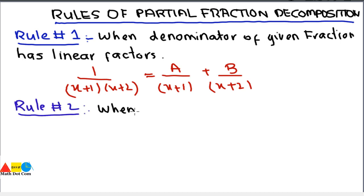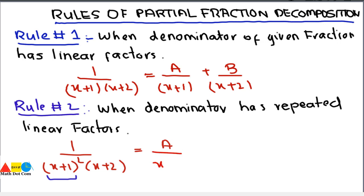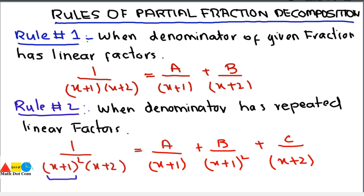Rule number two is when the denominator has repeated linear factors. For example, 1 divided by (x+1) squared times (x+2). Here the factor (x+1) is repeating two times. In such a case, the partial fractions will be of the form A divided by (x+1) plus B divided by (x+1) squared plus C divided by (x+2), where A, B, and C are to be found in order to find the partial fractions.